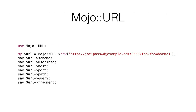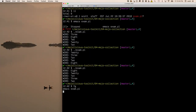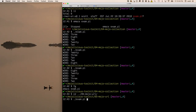Mojo URL is a URL parser. It implements a subset of RFC 3986, RFC 3987, and the URL living standard for uniform resource locators with support for international domains. Its constructor takes a URL string and immediately explodes it into components: the scheme, the user info if present, the host and port, the path, the query string, and the URL fragment that you would use in a single-page app.